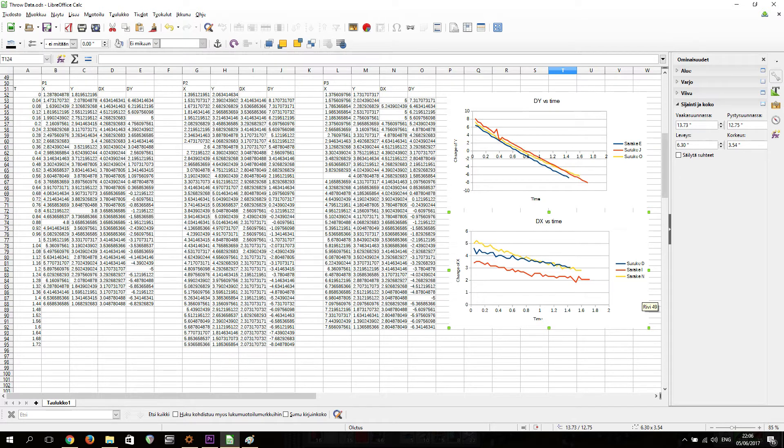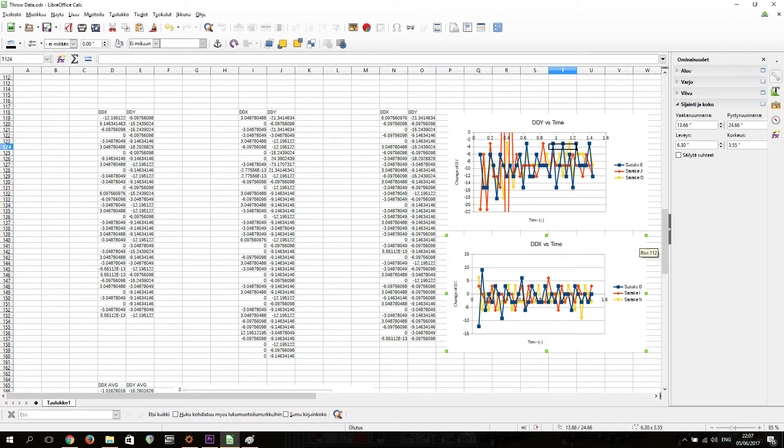Because each image was 1/25th of a second apart, to get the speed from meters per 0.04 seconds to meters per second, I had to divide the speed by the time thus scaling the speed to meters per second. After doing that to all three throws,